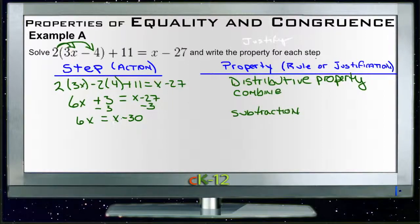Really, when you're writing out the rules, you can just think of what you did, and if it's an operation, it's just that operation property of equality. If we multiply both sides by the same number, that's the multiplication property of equality. Add the same number to both sides, that's the addition property of equality, and so forth.